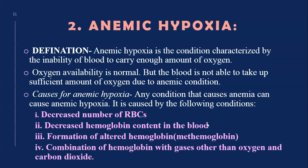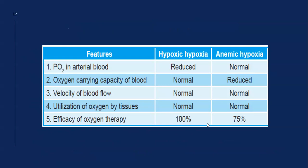Causes include any condition that causes anemia: decreased RBC count, decreased hemoglobin content, formation of altered hemoglobin such as methemoglobin, or combination of hemoglobin with gases other than oxygen and carbon dioxide. Because of these conditions, the blood has an inability to carry enough oxygen. The PO2 in arterial blood is normal, but the oxygen carrying capacity is reduced.